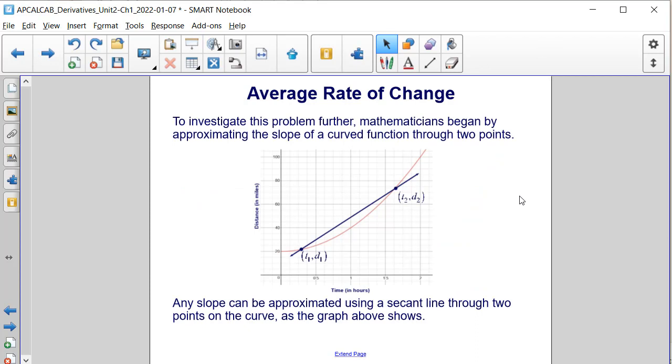To investigate this problem further, mathematicians began by approximating the slope of a curved function through two points. Any slope can be approximated using a secant line through two points on the curve, as is shown in the graph.